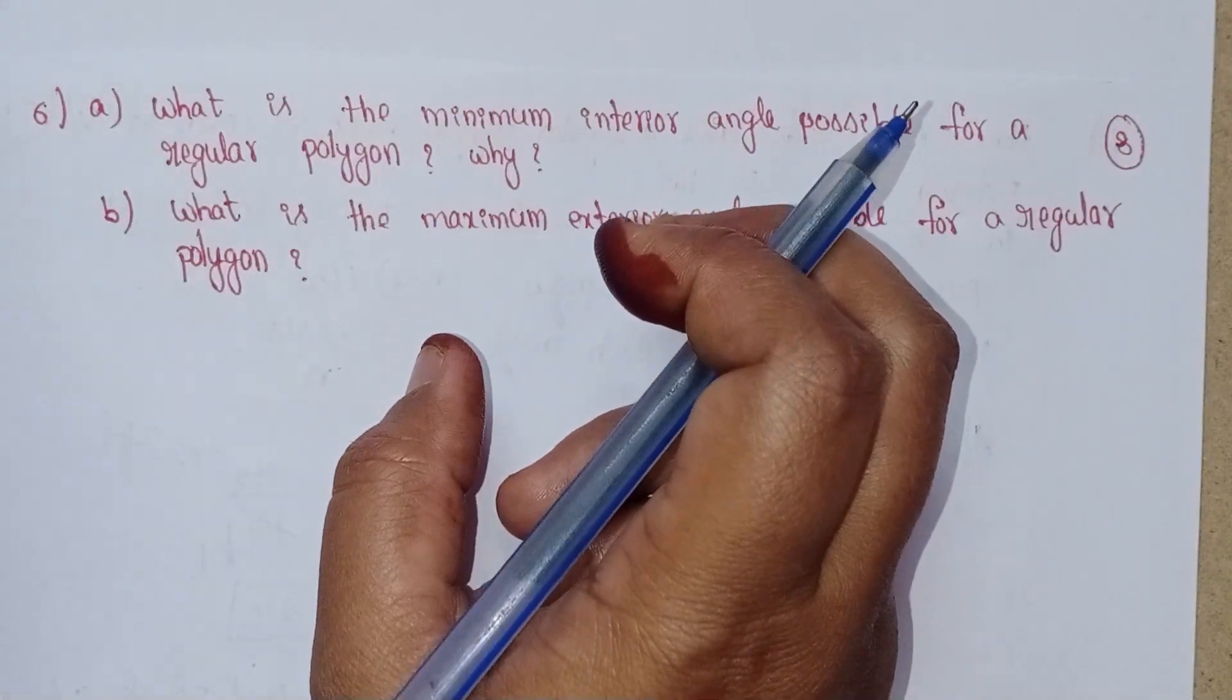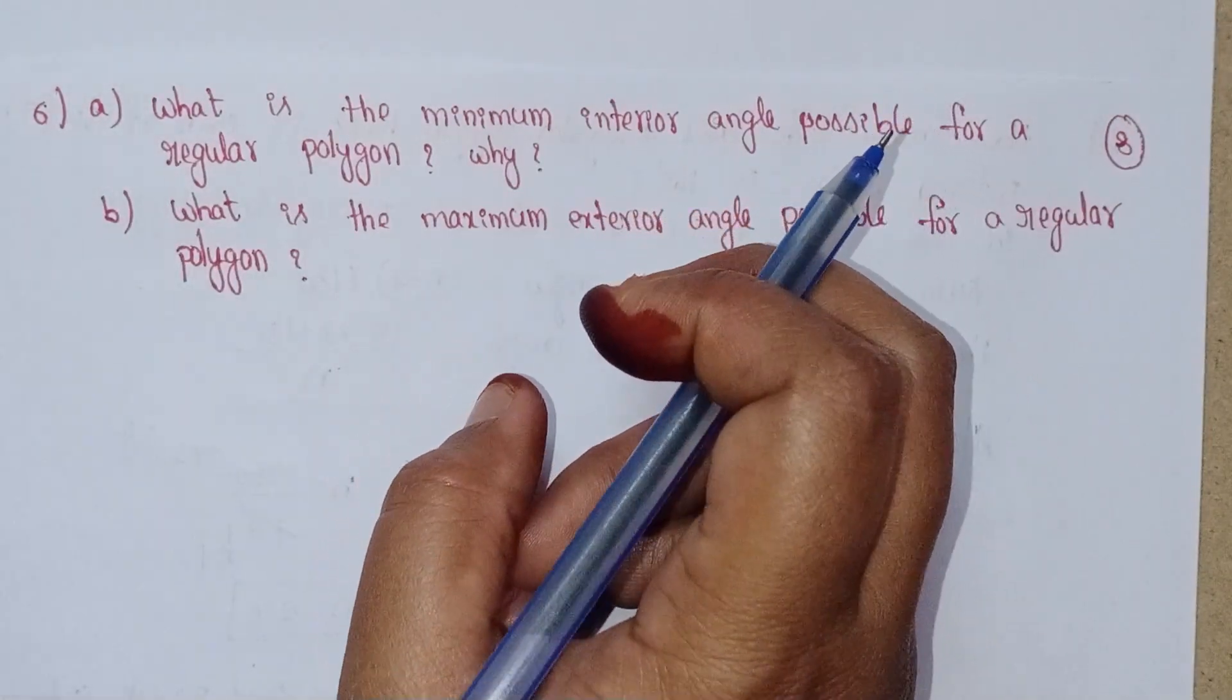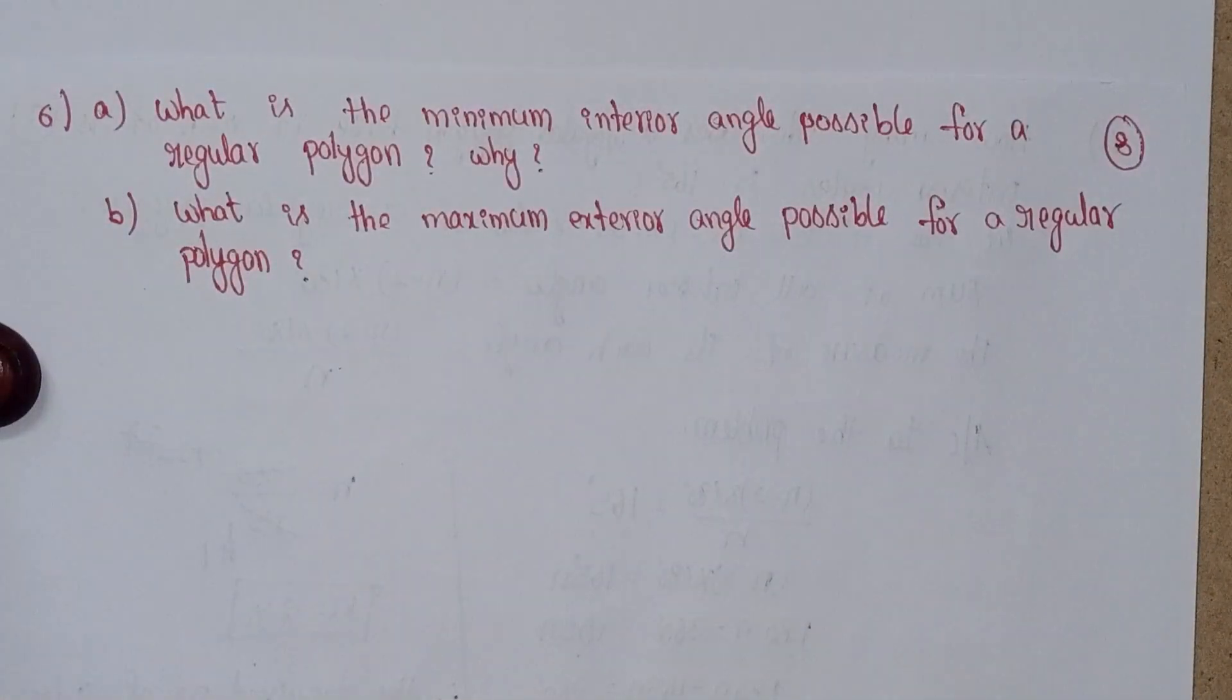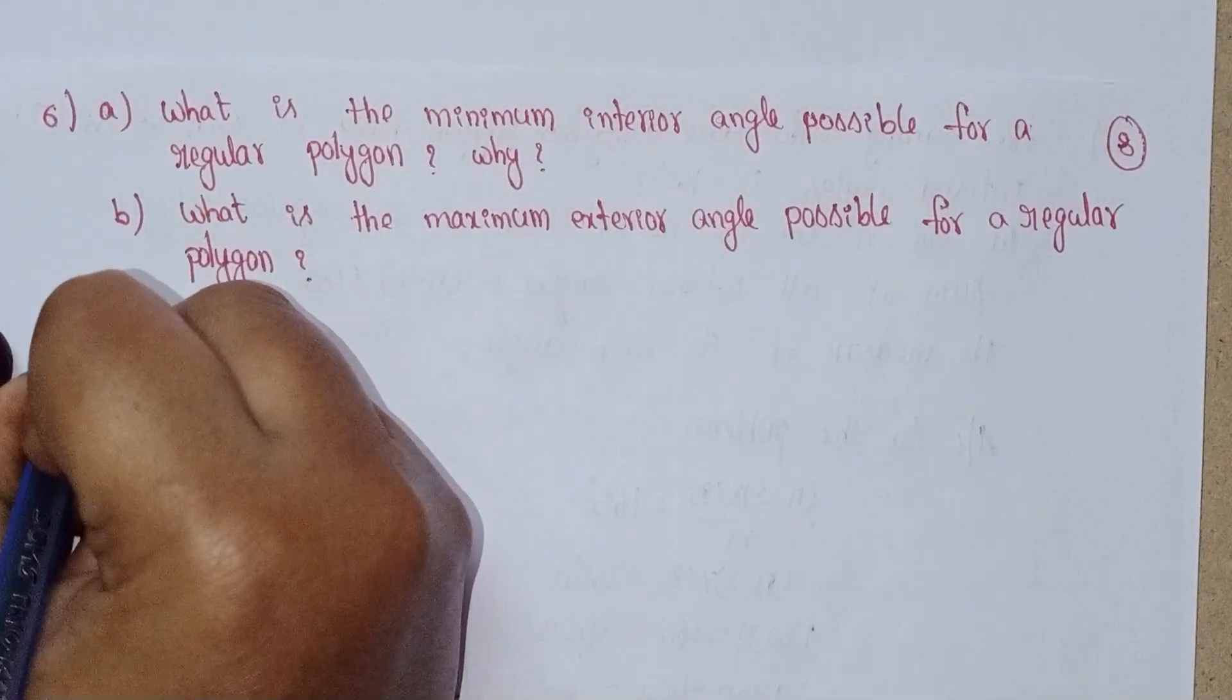Minimum interior angle possible for a regular polygon. Why? First of all, let's solve this.